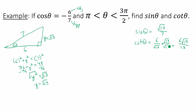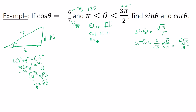Now, are these answers positive or negative? Theta is between 180° and 270°, which is quadrant 3. In quadrant 3, only tangent and cotangent are positive. So cotangent stays positive, and sine must be negative. The final answers are: sin(θ) = −√13/7 and cot(θ) = 6√13/13.